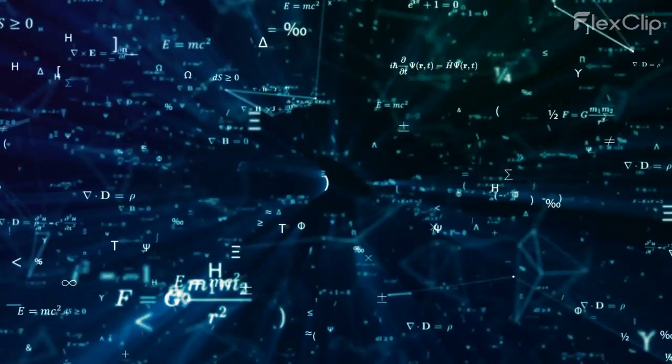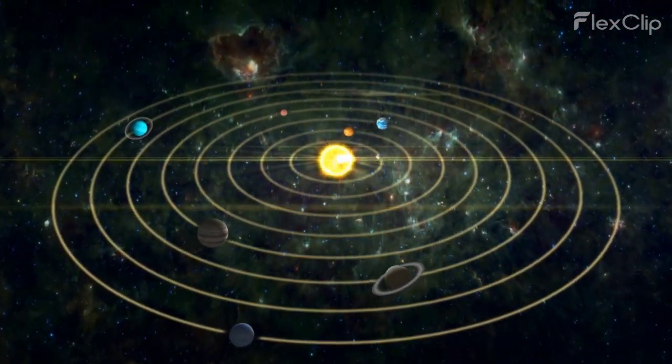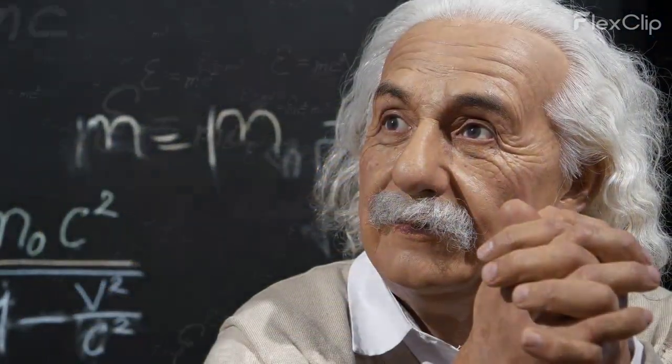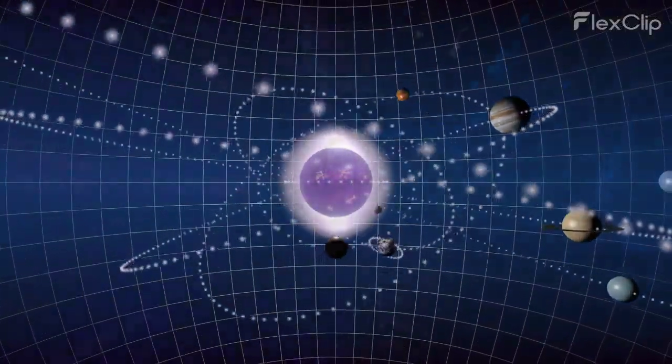In classical physics, space was considered an absolute and fixed framework in which everything occurs. However, with the advent of Einstein's theory of relativity, our understanding of space has evolved.